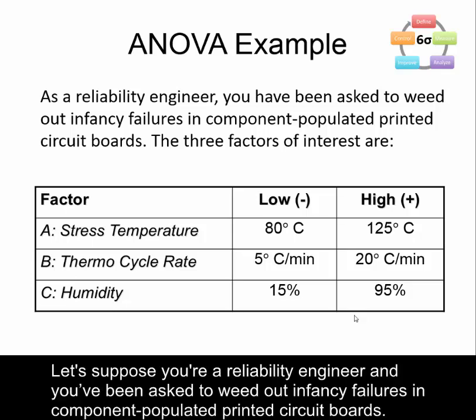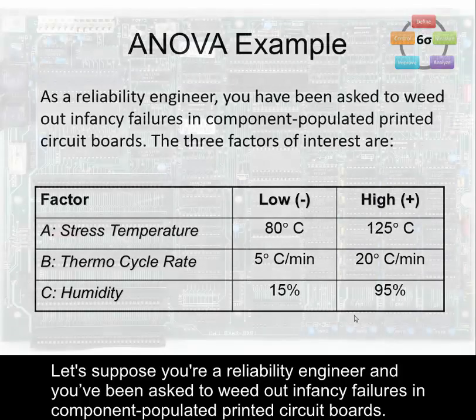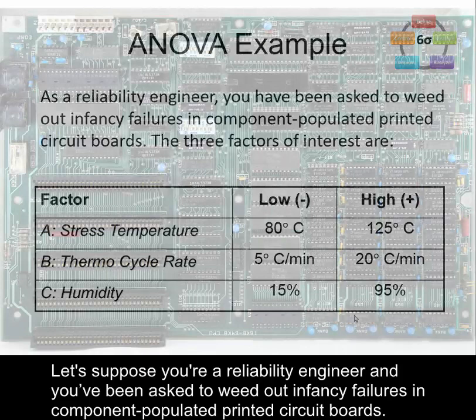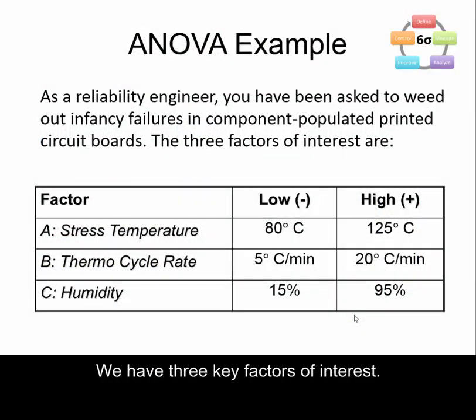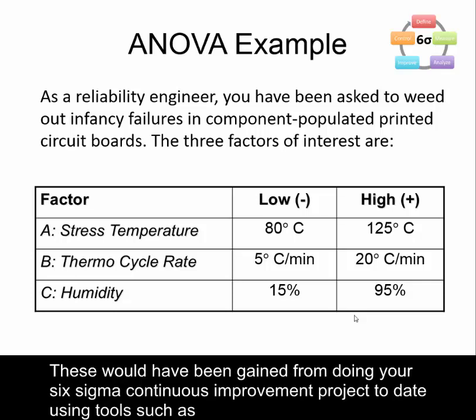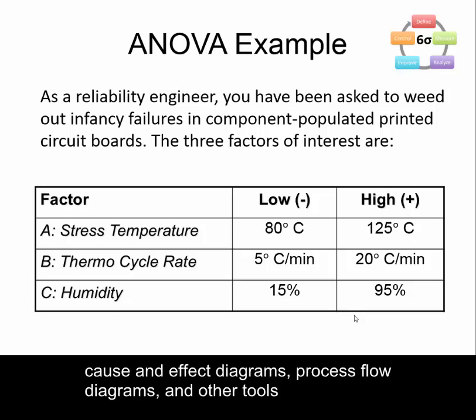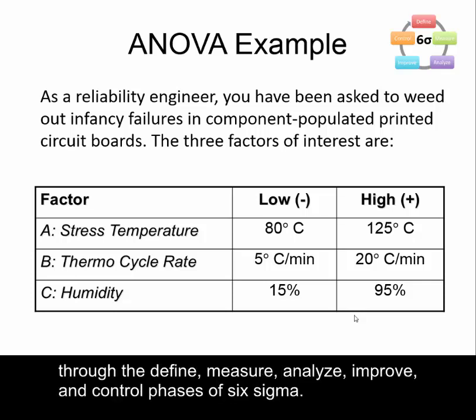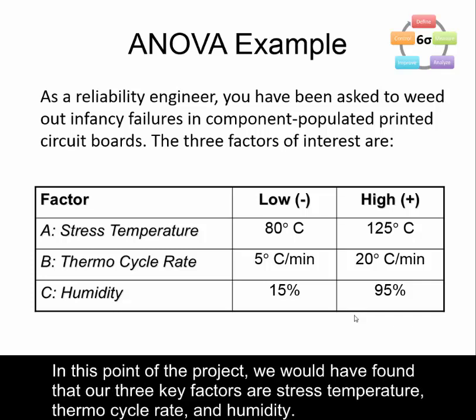Let's suppose you're a reliability engineer and you've been asked to weed out infancy failures in component populated printed circuit boards. We have three key factors of interest, which would have been gained from doing your Six Sigma continuous improvement project using tools such as cause-and-effect diagrams and process flow diagrams through the define, measure, analyze, improve, and control phases of Six Sigma. Our three key factors are stress temperature, thermocycle rate, and humidity.